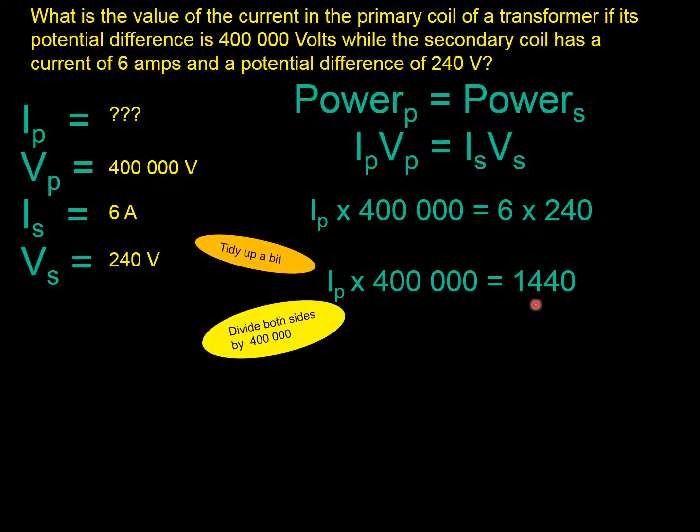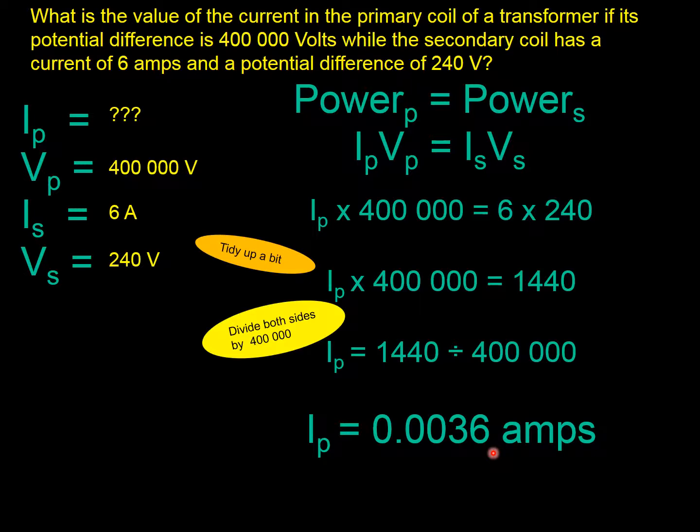Now, what we need to do is get rid of this 400,000, and we do that by dividing both sides by 400,000. And when you divide that, that's cancelled out, and that's on the other side. It's just standard rearranging, and it gives us the current on the primary. It's 0.0036 amps.